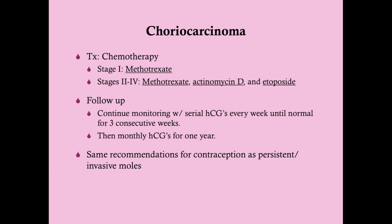The treatment is chemotherapy. Stage one can be treated with methotrexate; stages two through four get multi-agent chemotherapy. Some sources indicate you should use low risk versus high risk stratification as with persistent invasive moles — the same regimens apply. Because this is associated with a high HCG, HCG is a great tumor marker and will help you assess the response to chemotherapy. You'll continue monitoring with serial HCGs every week until you get normalization for three consecutive weeks.